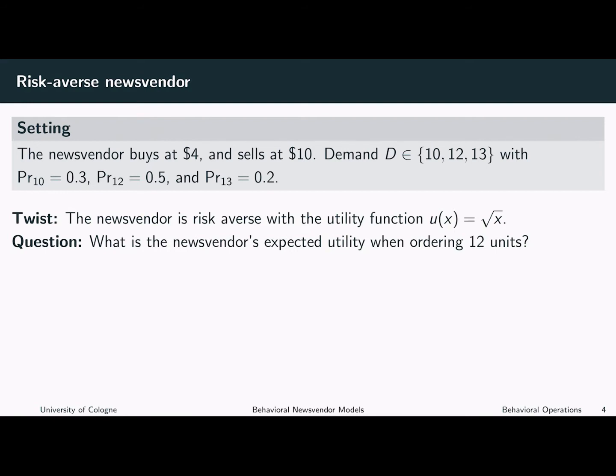If you can calculate the utilities associated with different order quantities, you can also determine the utility-maximizing order quantity. But now let's start with calculating the expected utility when ordering 12 units.